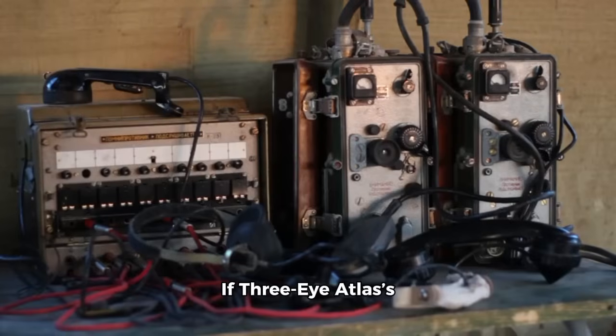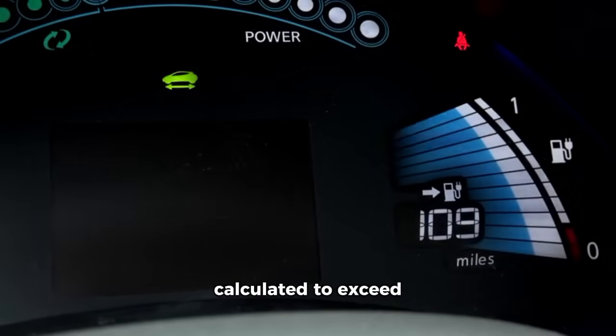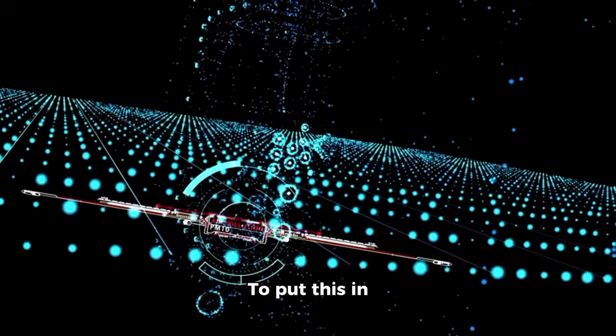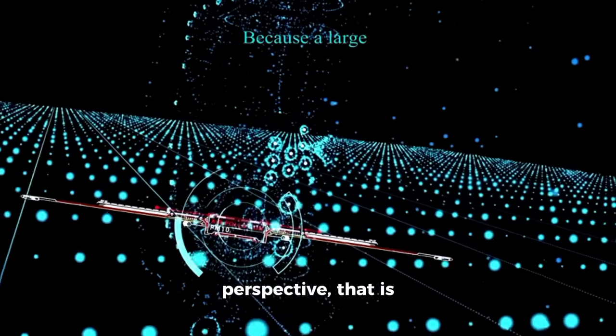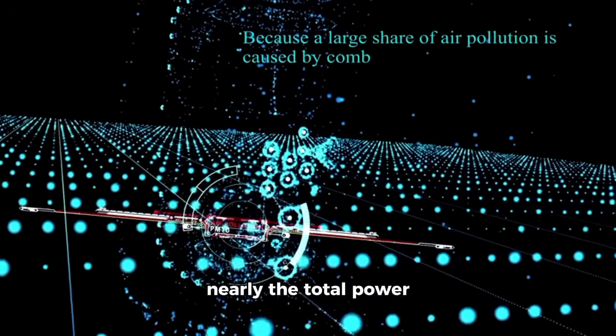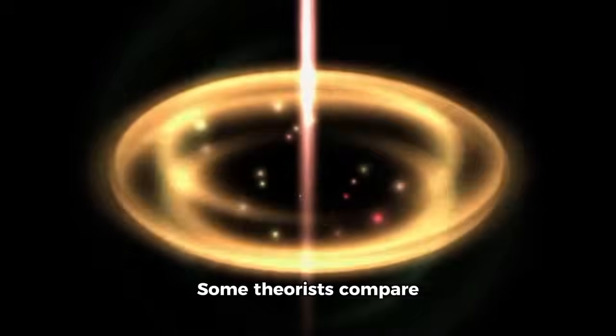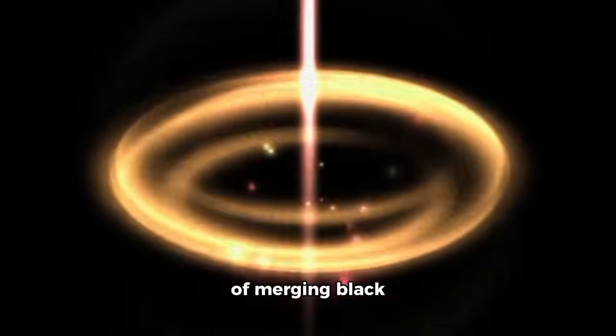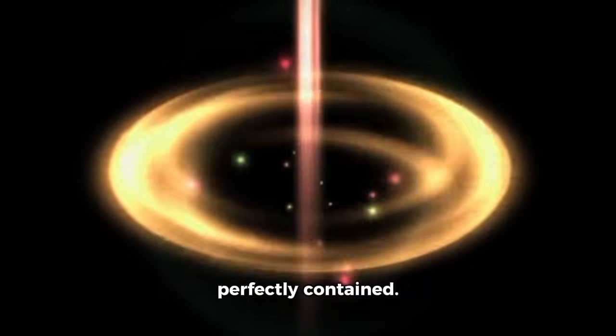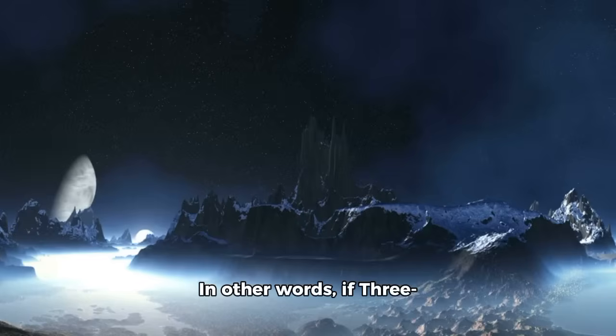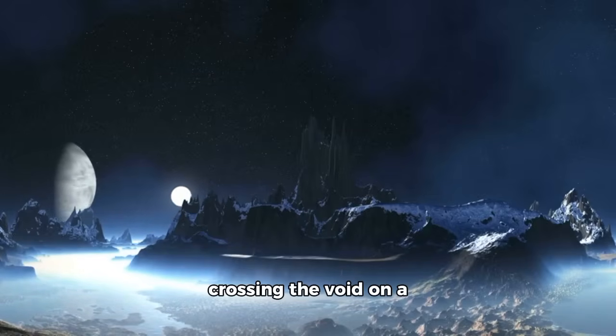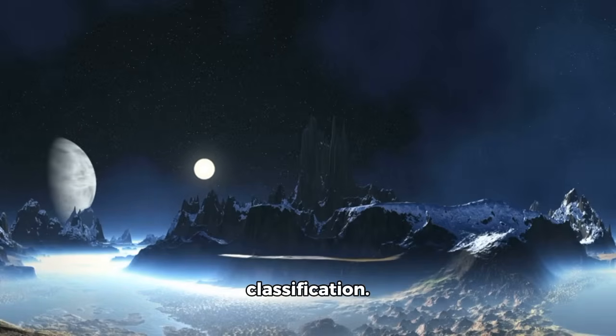If 3E Atlas's 10 gigawatt output was shocking, SWAN's core is awe-inspiring. Its energy levels are calculated to exceed 10,000 gigawatts every second. To put this in perspective, that is nearly the total power consumption of human civilization compressed into a single interstellar machine. Some theorists compare it to the energy release of merging black holes, scaled down but perfectly contained. In other words, if 3E Atlas is a scout, SWAN is a leviathan fortress crossing the void on a mission that eludes simple classification.